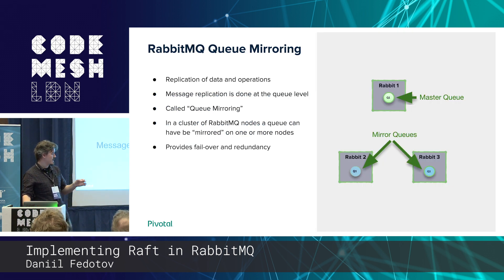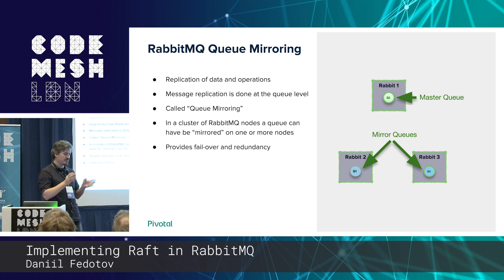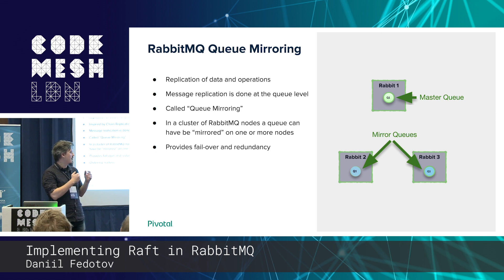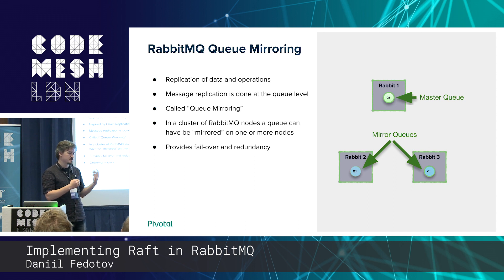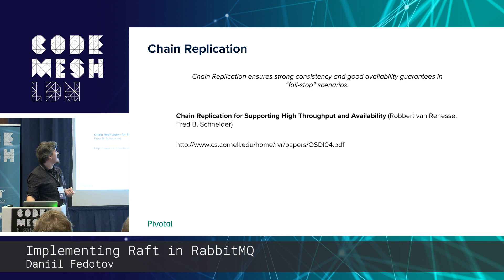How does it work right now and what are we trying to improve? Currently we have a concept of mirrored queues. A mirrored queue has a master queue which processes all messages — it handles publishers and deliveries — and you have mirror queues which exist on different clustered machines that just save data. Pretty simple, should work, right? And it works with a chain replication algorithm.